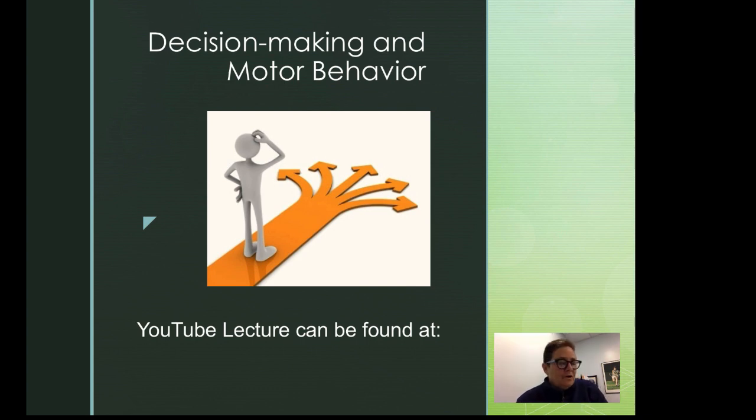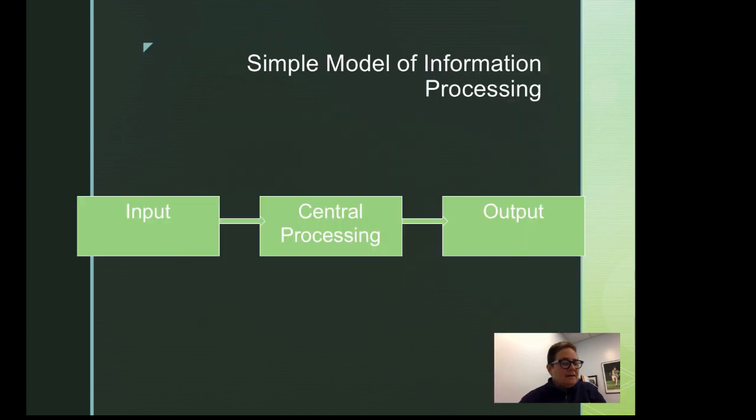I want you to notice that as we increase the number of choices or the number of stimuli that are presented to an individual, that that would actually increase the difficulty of the task or, in essence, increase the decision making part of the information processing model. So you'll notice that in this slide, we're looking at a very simplified model of information processing. Later on in this slide set, I present to you a more complex information processing model that was presented at first by a man named Welford.